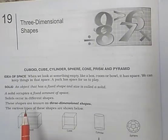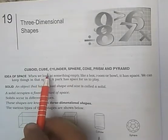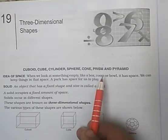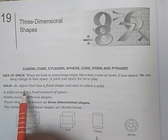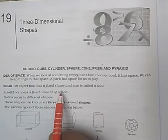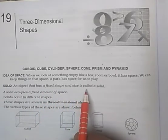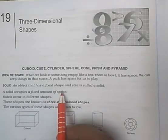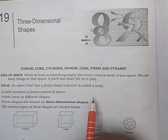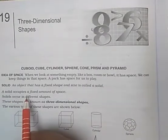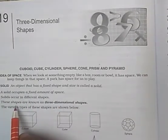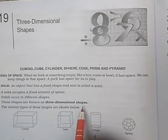In this chapter, we will study about cuboid, cube, cylinder, sphere, cone, prism, and pyramid. What is a solid? An object that has a fixed space and size is called a solid. A solid occupies a fixed amount of space and occurs in different shapes. These shapes are known as three dimensional shapes.